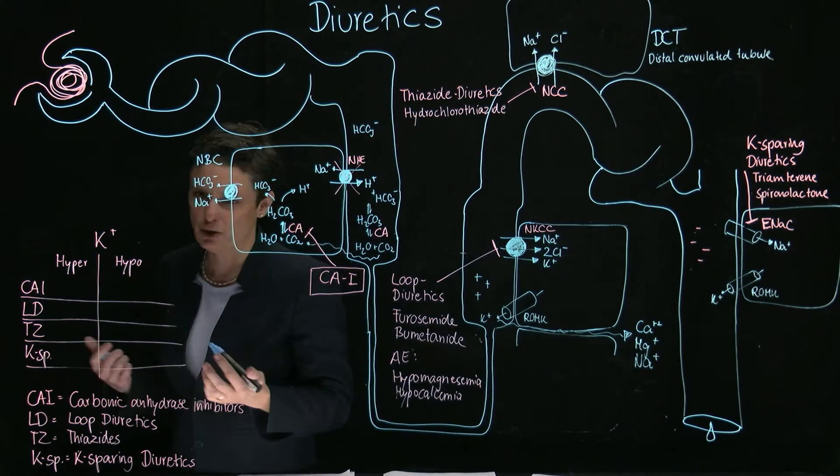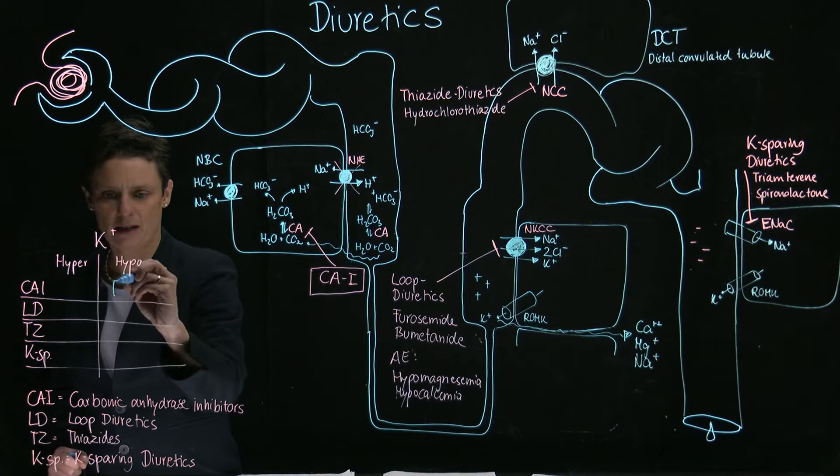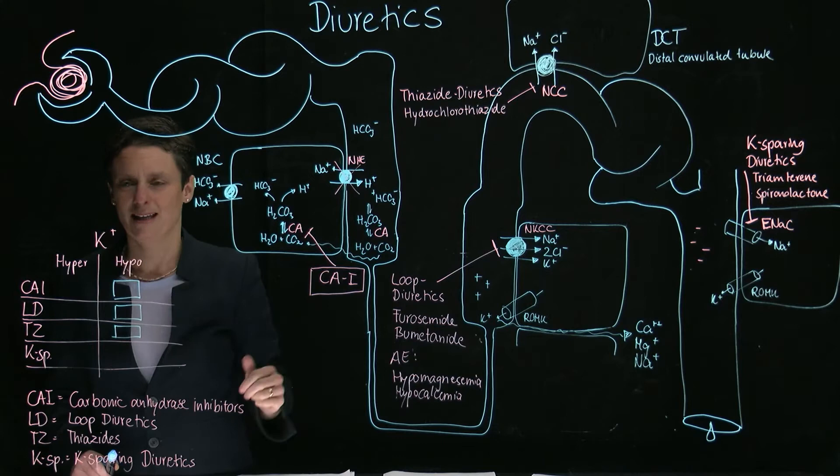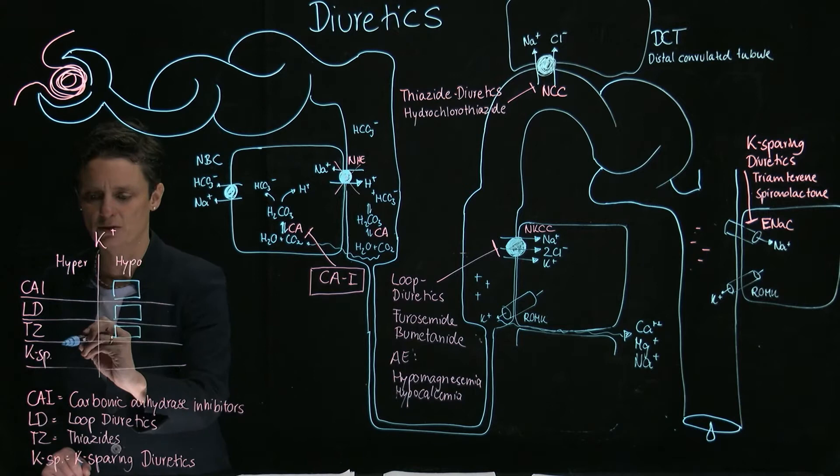Which diuretics work proximal to ENaC? Definitively the carbonic anhydrase inhibitors, the loop diuretics, and the thiazides. For the potassium-sparing diuretics, it's already in their name — they block ENaC, so we're not going to have potassium leaking back out, and we're going to spare potassium. Therefore, these drugs lead to hyperkalemia.